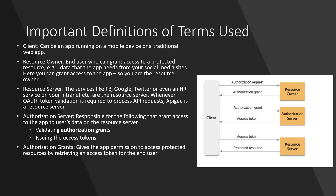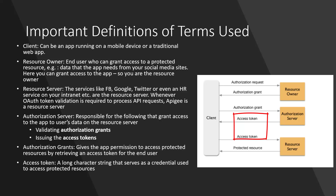The authorization server validates user authorization grants and issues access tokens. An authorization grant gives the app permission to access protected resources by retrieving an access token for the end user. An access token is a long character string that serves as a credential used to access a protected resource.